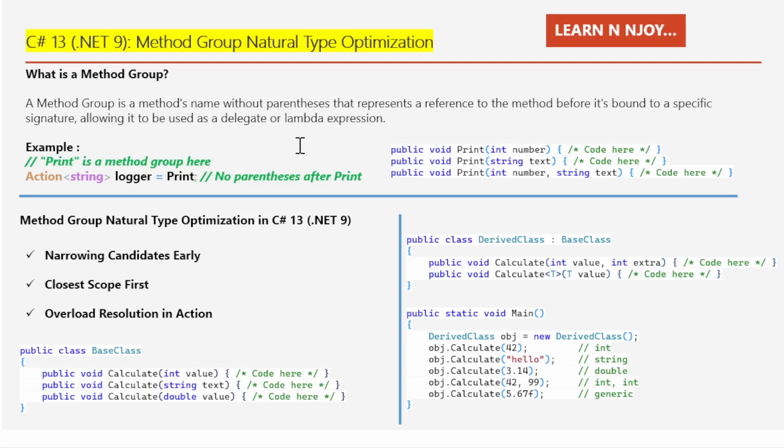Let's understand it with the help of an example shown over here. So here there is an Action delegate, Action string logger, and I am assigning this print keyword to it. So what is print over here? Print is nothing but a method group. If you notice, I haven't provided any parentheses after this print word. So this is nothing but a method group.